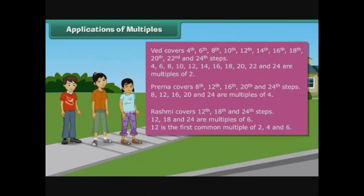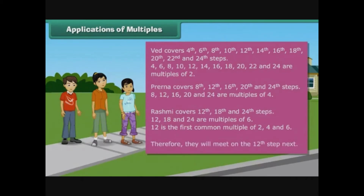Twelve is the first common multiple of two, four and six. Therefore, they will meet on the twelfth step.